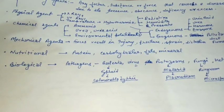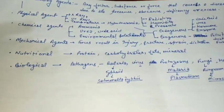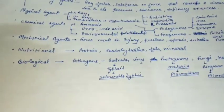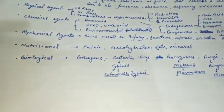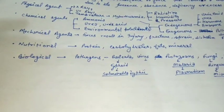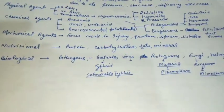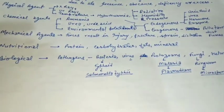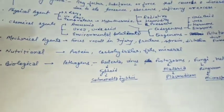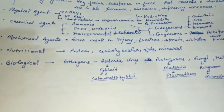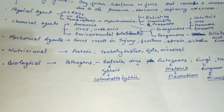First, we talk about physical agents. Physical agents can include temperature — for example, hypothermia is a disease caused by very cold conditions where body temperature drops. Radiations are also physical agents — X-rays and UV rays can cause various diseases. Humidity and pressure are also physical agents that can cause disease.